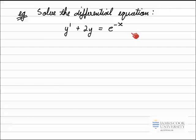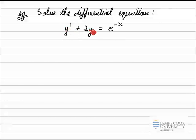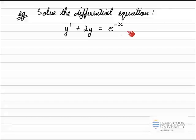Remember the two methods for solving differential equations: either separation of variables, or using the integrating factor. In this case, I've got three terms — dy/dx rearranged by itself, 2y, and the right-hand side. So they're not factors; I can't get the y's and x's as factors by themselves. So this equation is not separable, and I can't use separation of variables.